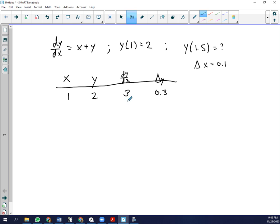And so that would add to this y, and our new x would be 1.1, and our new y would be 2.3. This slope would be the sum of x and y, 3.4, and so the delta y would be 0.34.